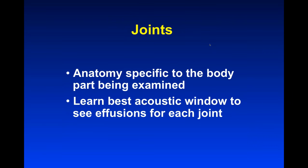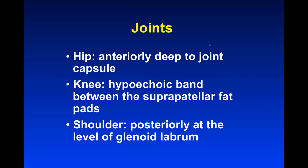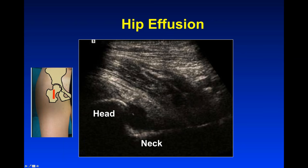Moving on from tendons to joints. The anatomy of joints is specific to the body part being examined. We learn the best acoustic window to see effusions for each joint. For the hip, we look anteriorly at the joint capsule — we have the femoral head and femoral neck, and fluid lifts up the anterior joint capsule. It tends to collect right at the head-neck junction because that's where the biggest potential space is. That's where we look when aspirating or injecting a hip.